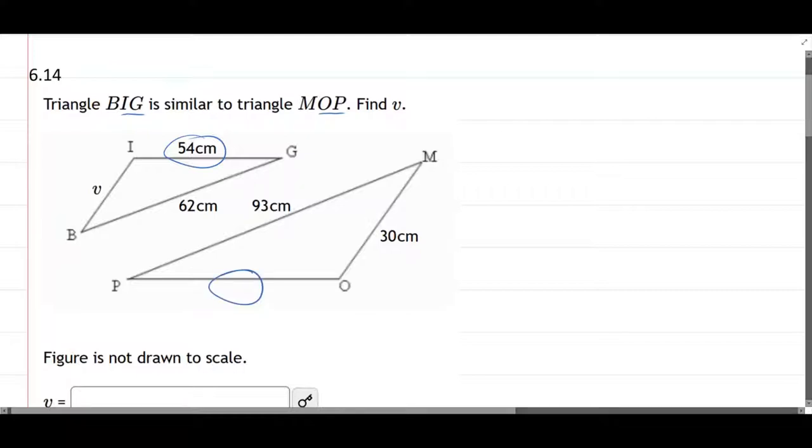The next side, we'll switch to purple. So we'll use the 62, and that's the B-G side. B-G, which corresponds to M-P, right there.